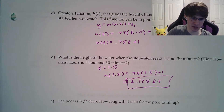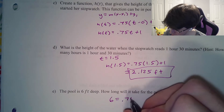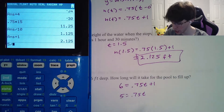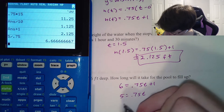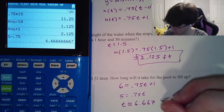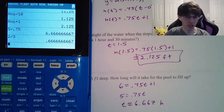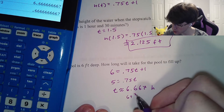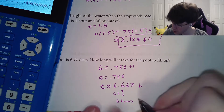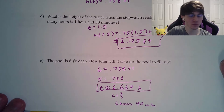The pool is 6 feet deep — how long will it take to fill up? Set y equal to 6: 6 equals 0.75t plus 1. Subtract 1 on both sides and divide both sides by 0.75. You end up with t approximately 6.667. This is 6 plus 2 thirds hours. Since two thirds of an hour is 40 minutes, the perfect answer is 6 hours 40 minutes — though 6.667 hours is also acceptable.